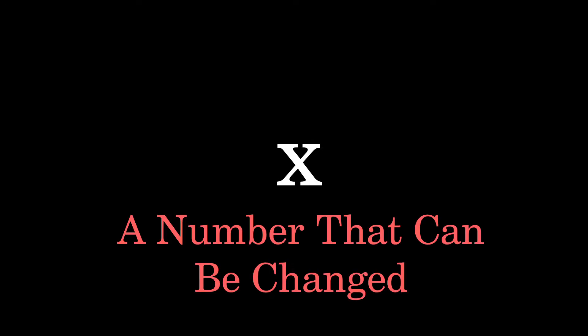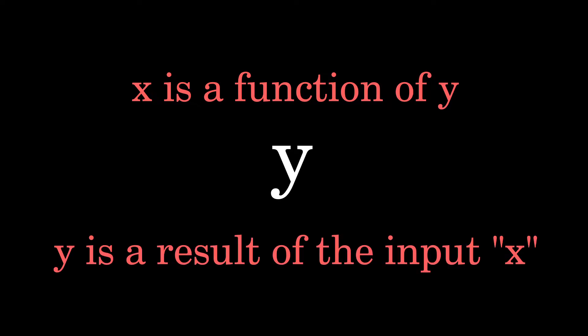X as an unknown is one of the more common ways that it is represented, but it can also be represented as a number that can be changed. To understand that, we must understand what Y really means. Algebraically, X is a function of Y, meaning that Y is the unknown resulting from creating an input for X. That may be a lot to unpack, but things will become clearer soon.